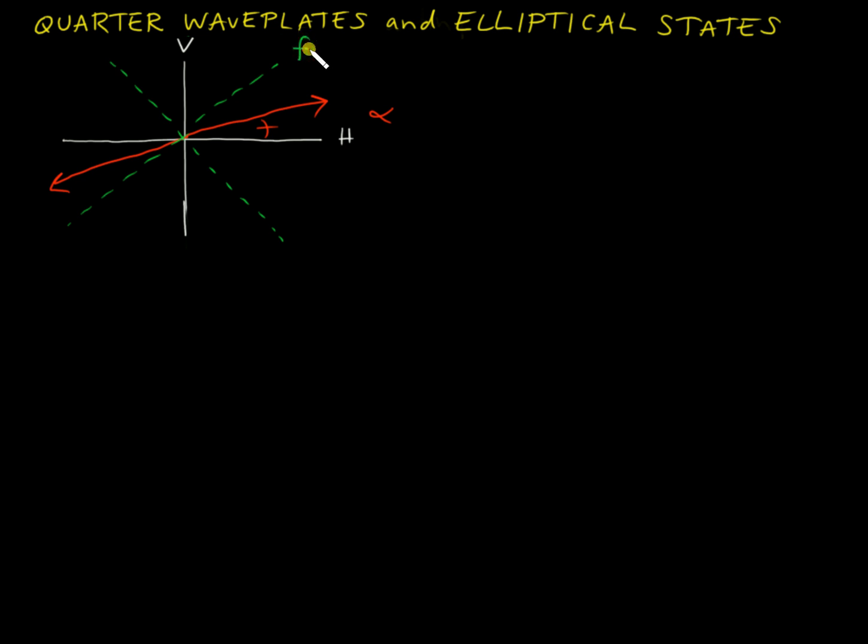So I'll write F for the fast axis and slow for the slow axis. And that waveplate makes an angle with the horizontal axis also, and I will label that angle here, and I will call that angle theta.